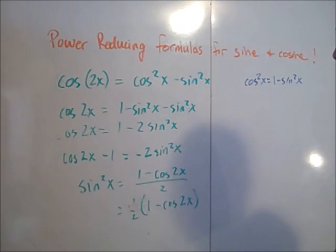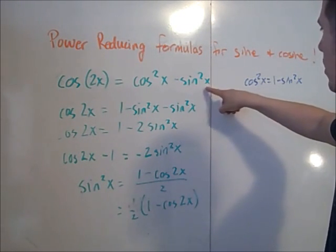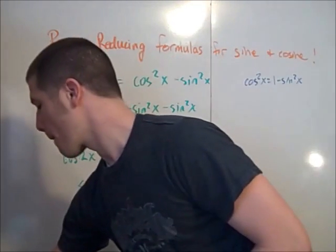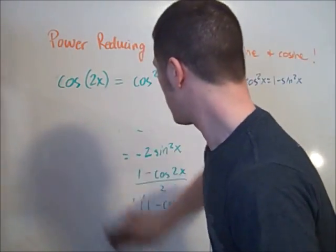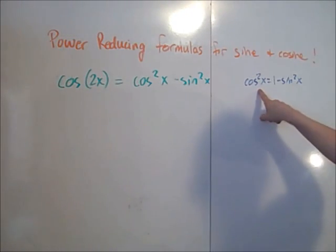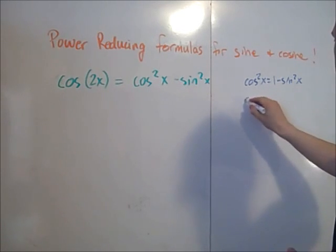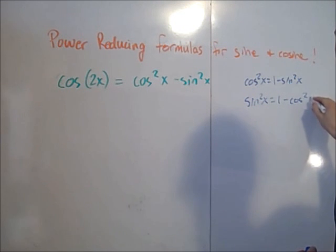So what's the power reducing formula for cosine squared? Well, we actually start with the exact same trig identity — the double angle formula for cosine — so we'll start at the start here. But this time, instead of substituting cosine squared, we make a different substitution, using the trigonometric Pythagorean theorem: sine squared x is 1 minus cosine squared x.